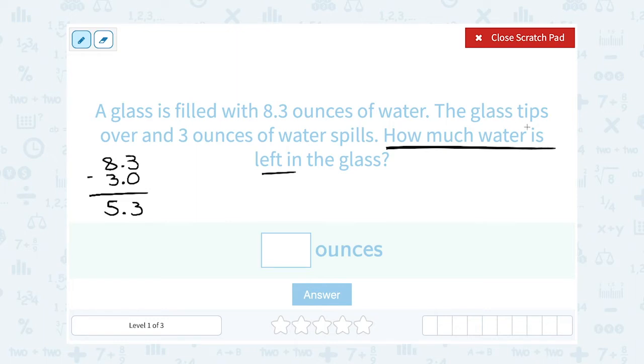So the water would still have 5.3, or the glass would still have 5.3 ounces of water left.